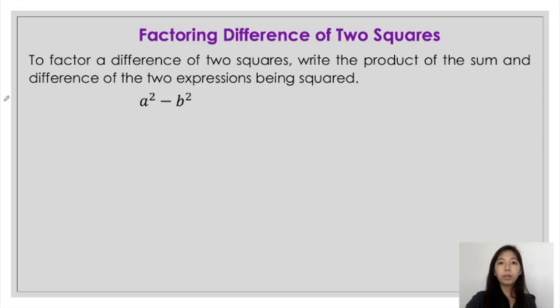Given the general form of a difference of two squares — a squared minus b squared — the factors would be the product of two quantities, one using addition and one using subtraction as the operations involved.